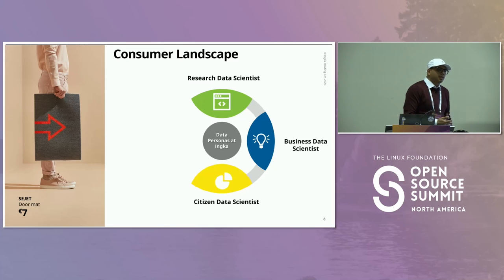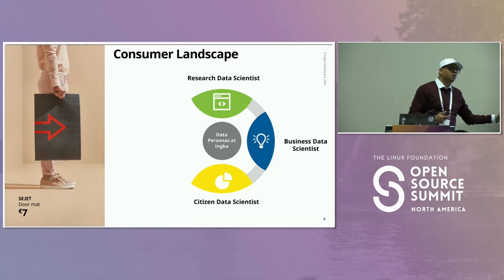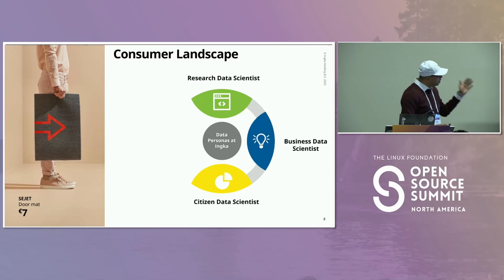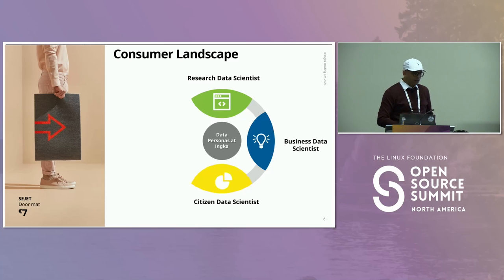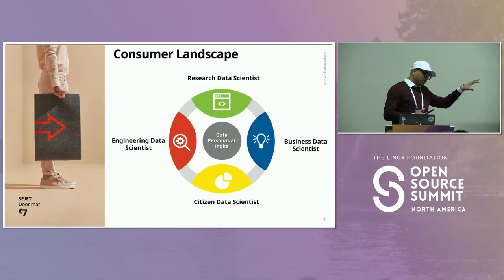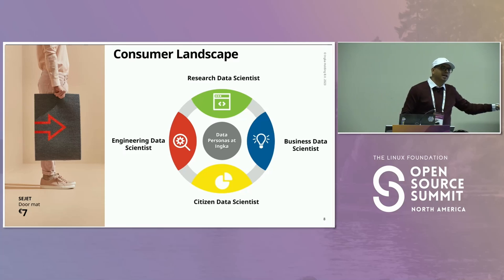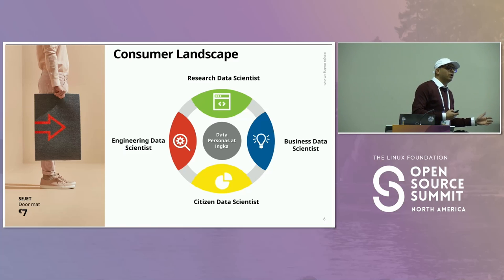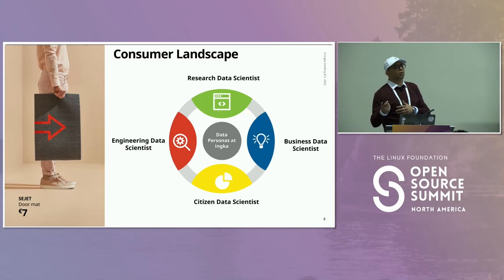We also have citizen data scientists — people not trained in math and stats, but whose job requires it: IT operations, working with operational data, incident volumes, problem management — requiring anomaly detection or time series models. Both business data scientists and citizen data scientists need a GUI, not code. They want drag-and-drop, click next-next-next. They just need a model or a report. Then there are engineering data scientists — also including machine learning engineers — who work with production models, developing and deploying them to drive add-on revenue for IKEA.